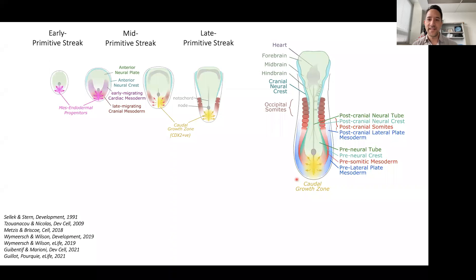When you look at it in this way, you can start to appreciate that these anterior structures, such as the heart and the forebrain, they were derived through early events in gastrulation, but more posterior structures have been derived later in time from this chordal growth zone.